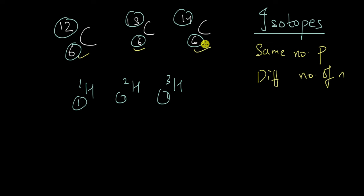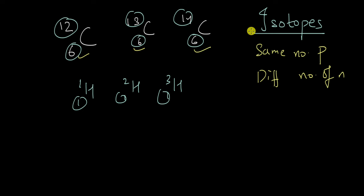The protons are the same — that is why the atomic numbers are the same. But because isotopes have different numbers of neutrons, they have different mass numbers. Remember this term — isotopes — it's going to come in very handy in the rest of your chemistry journey.